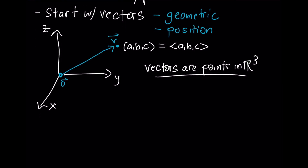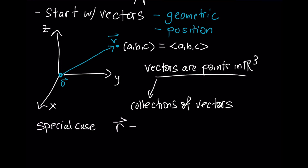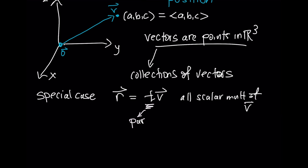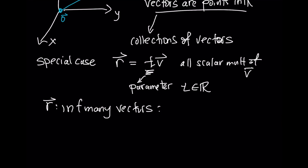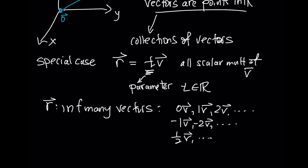You can then talk about collections of vectors. We're going to talk about a very special case to begin with: every multiple of a single vector V. This T right here is called a parameter, and what that means is it's a number, some real number — you can set it to be anything you want. This gives us infinitely many different vectors. It includes 0V, 1V, 2V, and it can go up as far as you'd like. You can have negative 1V, negative 2V, fractional multiples, or even irrational multiples like e times V or pi times V. This nice formula collects them all.